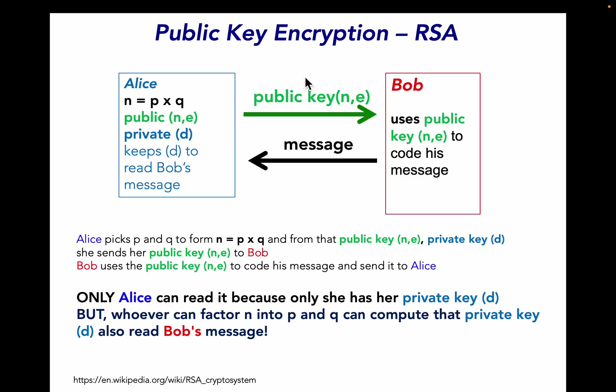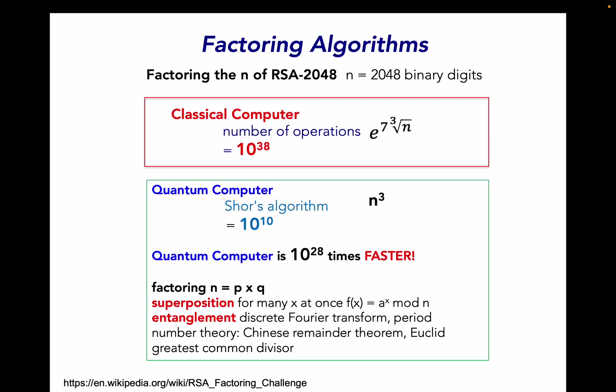In the public key encryption system, Alice picks numbers p and q, multiplies them together to create n. She does other things on those to create a public key and a private key. She keeps the private key to herself but sends the public key to Bob. Bob uses that public key to code his message which goes back to Alice. Alice has that d which you need to decode the message. Only Alice can read it because only she has her private key. But whoever can factor n into p and q, because she's included that n with the e she sent, can compute that private key and also reads Bob's message. But it's not so easy to do that factoring.